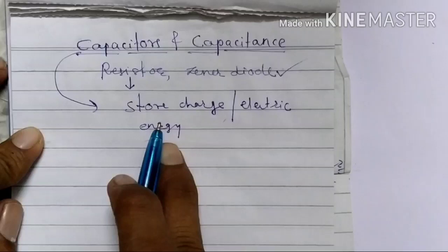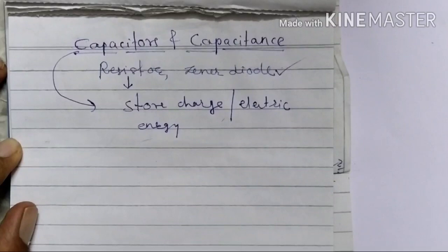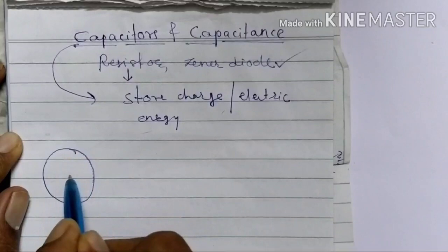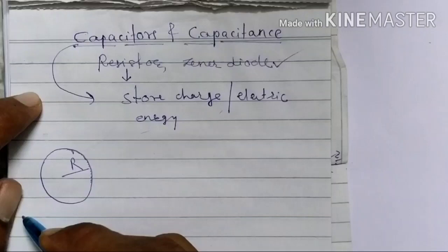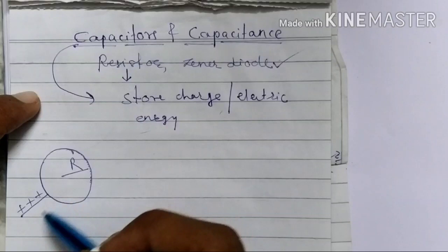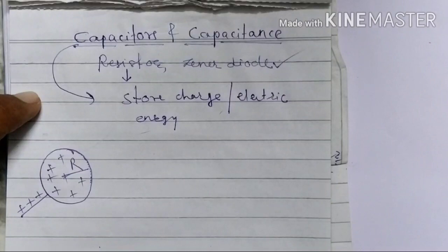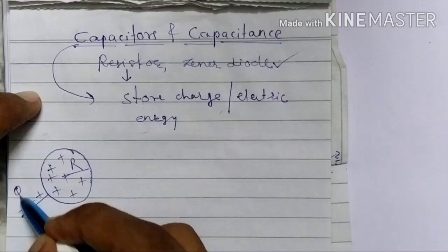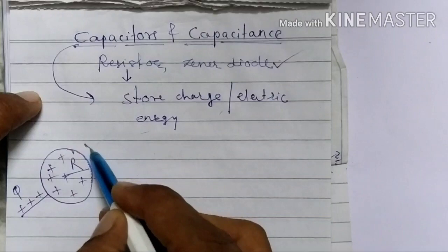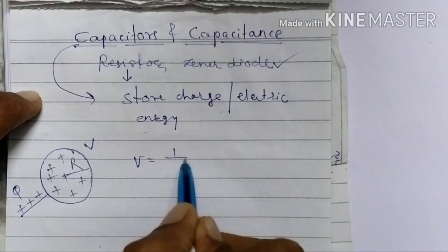So how does it store charge? Basically a capacitor is nothing but a metal plate. Suppose a metal plate having radius R. Now we provide a plus Q charge to a particular metal plate. As we provide the plus Q charge, the charge distribution takes place over its surface and its potential increases. V is equal to 1 over 4π ε₀ times Q upon R.